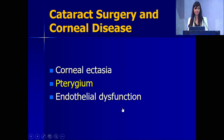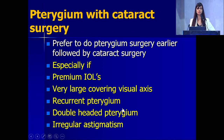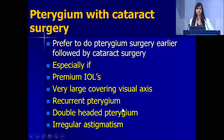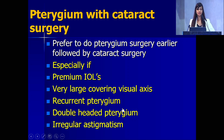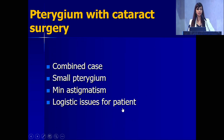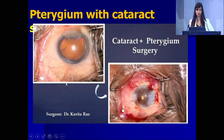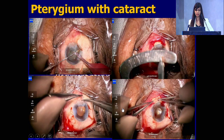The next topic is pterygium, which is relevant because all of us face these questions — whether to do a pterygium first or a cataract first. In ideal situations, it is always better to do the pterygium first and then do cataract surgery, and definitely more so if you are doing a toric IOL, a multifocal IOL, if there is a large pterygium covering the visual axis, if it is a recurrent or double-headed pterygium, or if there is irregular astigmatism. Combined cases may be considered if the patient is logistically unable to come back for a second surgery or if it is a very small pterygium.